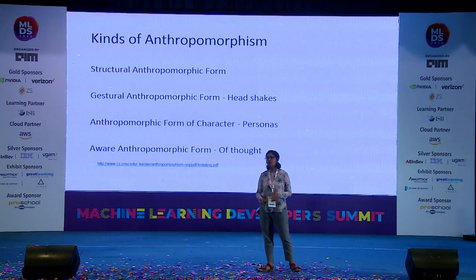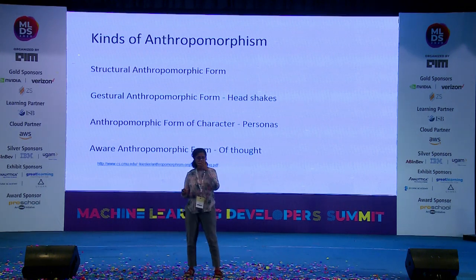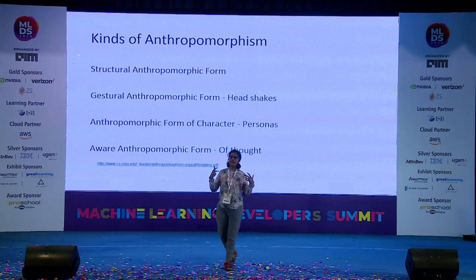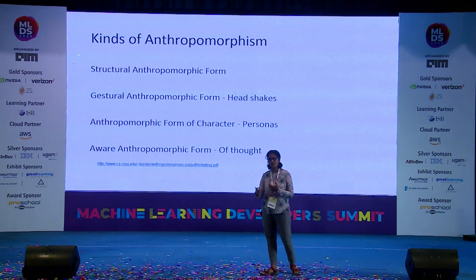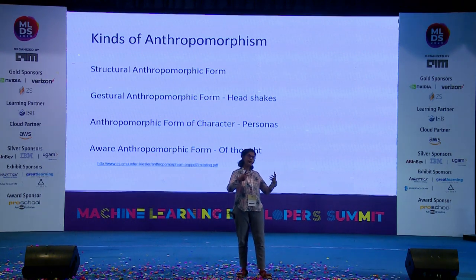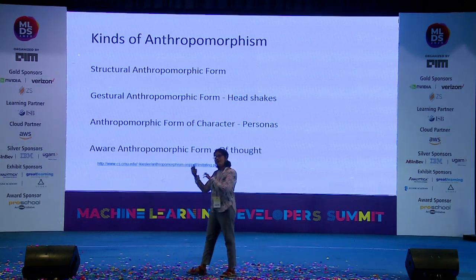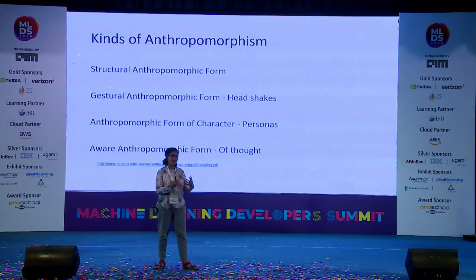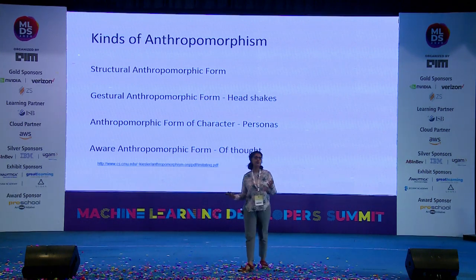Anthropomorphic form of thought is the next level — can it do even better than a human being? Can it help with extraordinary things? This is about thought and how you exhibit anthropomorphic characteristics with respect to cognition. And this is not only for bots — any anthropomorphism, if you're developing any product, all of these can come in handy.